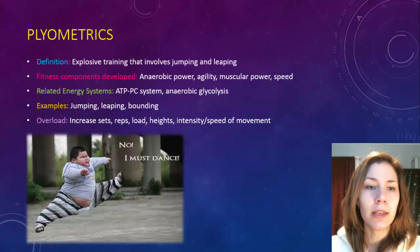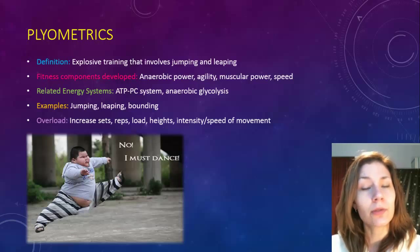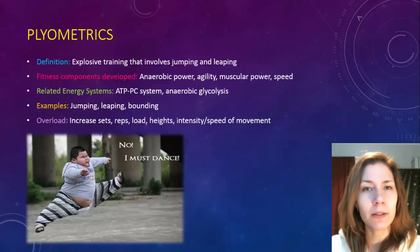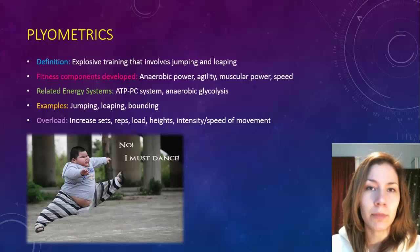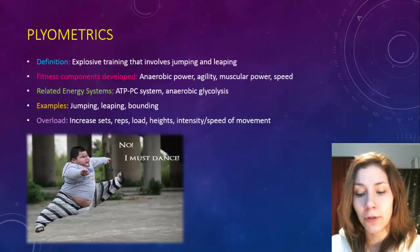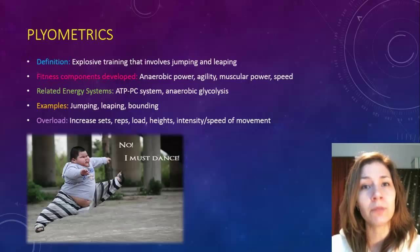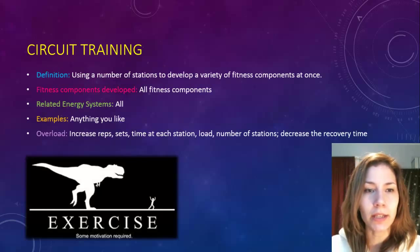Plyometrics is explosive training — it's fairly limited to various areas of the body, particularly the legs. It focuses on developing anaerobic power and muscular power. If you include jumping, leaping, and bounding in your training program, you're doing plyometrics. To overload it, you can increase sets and reps, increase the load, increase the heights — for example, if you're jumping over small hurdles, raise them — and also increase the intensity and speed of the movement.